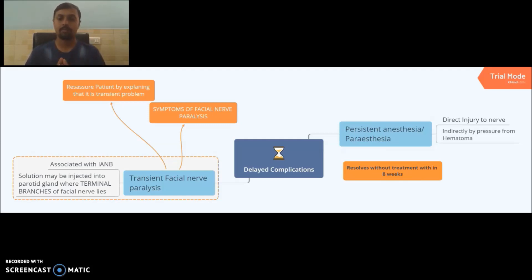Persistent anesthesia or paresthesia is altered sensation. It can occur two ways: directly by injuring the nerve - we will see in our future video regarding nerve injuries like first degree injury, second degree injury, third degree injury - so whenever you directly injure the nerve such anesthesia can occur. Indirectly by pressure from hematoma. Whenever such persistent anesthesia occurs, it resolves without treatment within eight weeks, but sometimes it takes a little longer period. Always follow the patient and check for nerve regeneration.